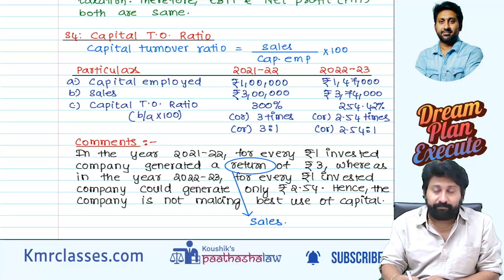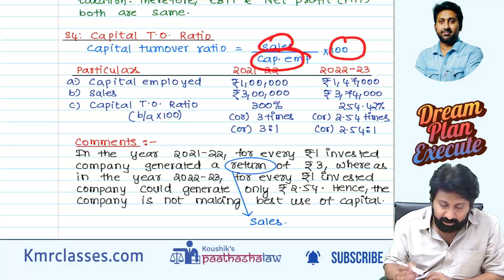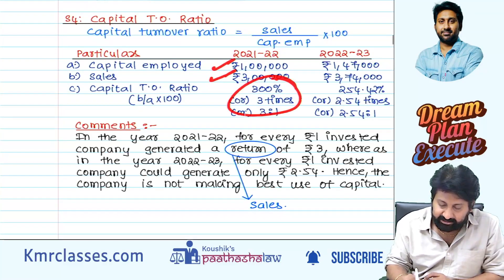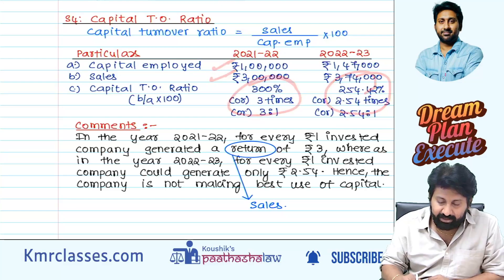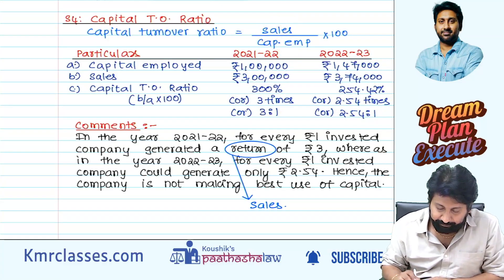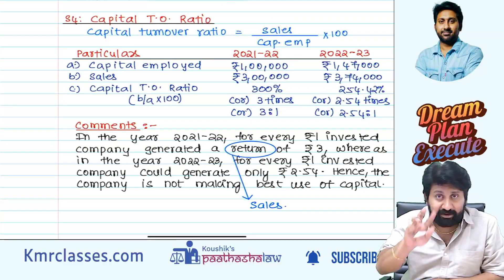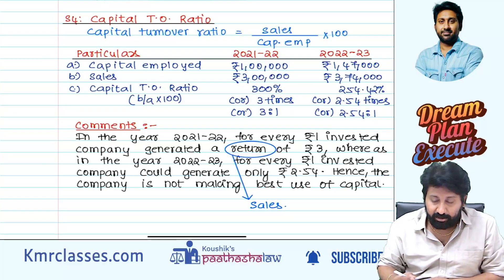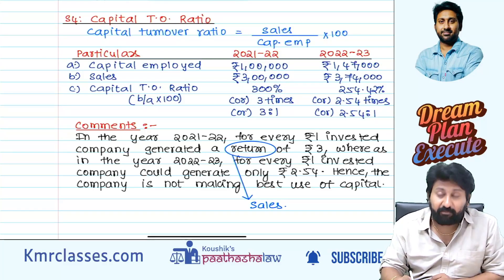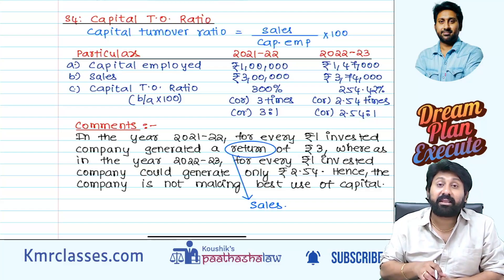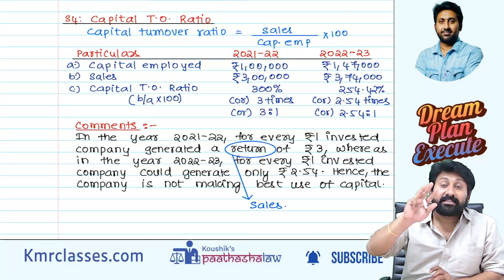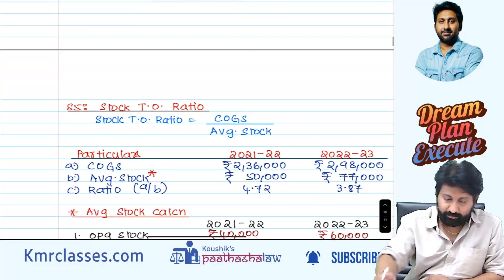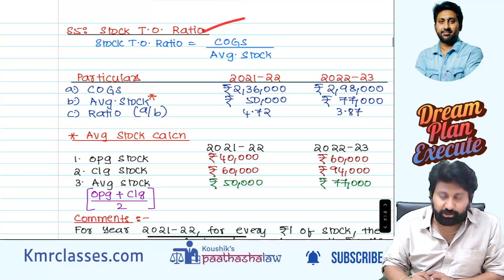Capital turnover ratio — whenever I say turnover ratio, sales should come in the numerator. Sales by capital employed into 100. They will give you capital and sales. You can write it as 300%, which means sales are performing three times — for every one rupee capital invested, three rupees of sales are generated.